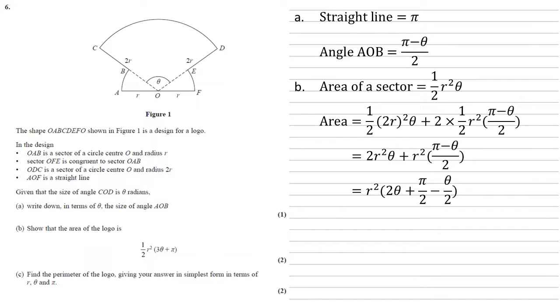Taking out the R squared, we've got R squared times 2θ plus π over two minus θ over two. So I've just separated that fraction there.